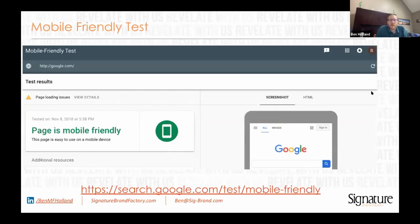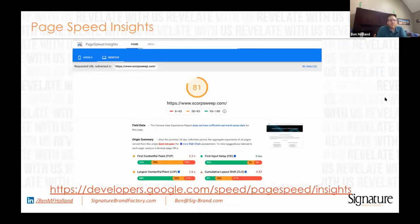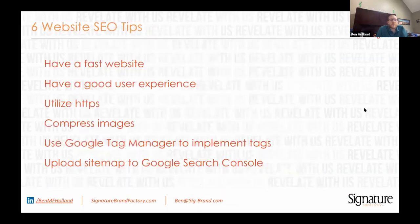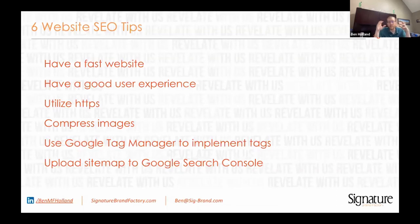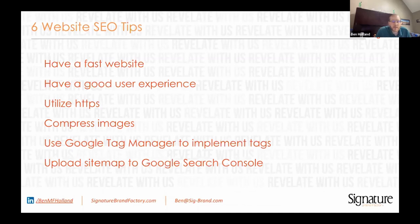There's a mobile-friendly test from Google — a great way to see if you're doing well on that mobile index. Page Speed Insights is a great way to find out if your site is fast. Six website tips: have a good fast website, have a good user experience, utilize HTTPS, compress your images — I've seen so many websites with gigantic file-sized images that could be compressed without losing beauty. Use Google Tag Manager to implement your tags, and always upload a sitemap to Google Search Console so Google knows what pages you want crawled.